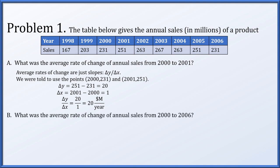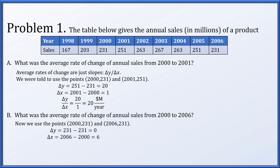For part b, the average rate of change from 2000 to 2006: one point stays the same, the other changes to 2006 with y value 231. Delta y is 0, delta x is 6, so the ratio 0 over 6 is 0 million dollars per year.